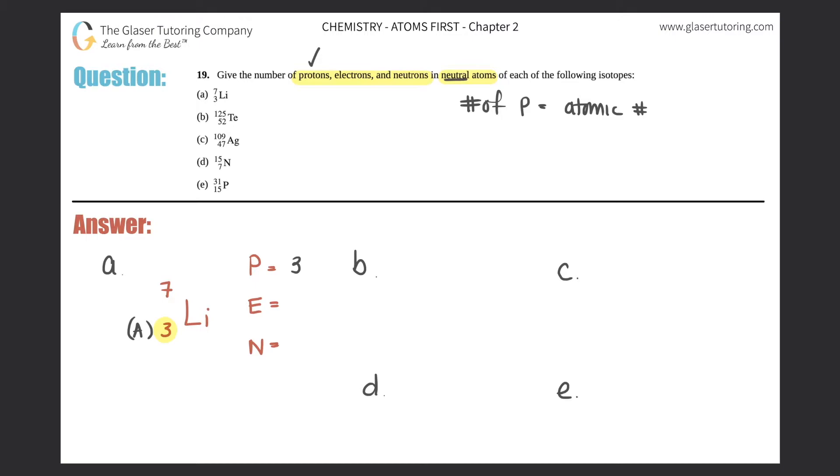Now they tell us that it's neutral. So when you have a neutral atom, that means that the total number of protons will always equal the number of electrons because they will cancel out. Your positive charges will be equal to the number of negative charges, which are electrons. And when you add them together, you will get a zero charge, a neutral charge. So if you have three protons, you should have three electrons. And all of these are neutral, so the protons will equal the electrons.